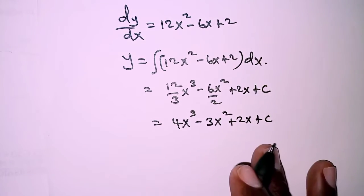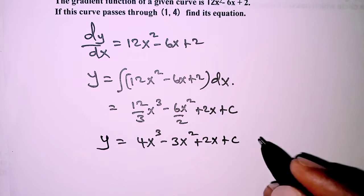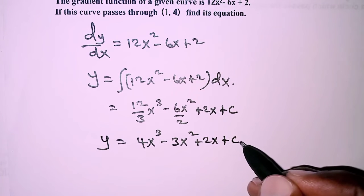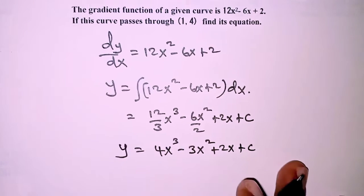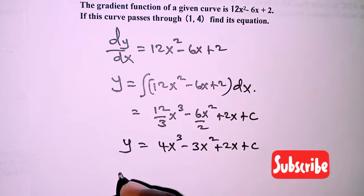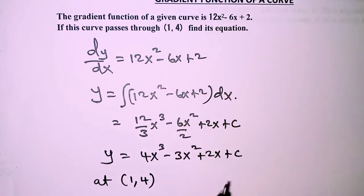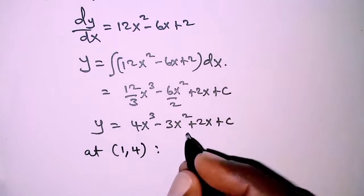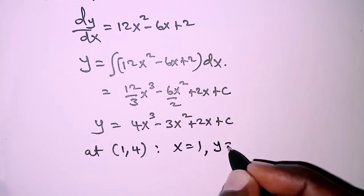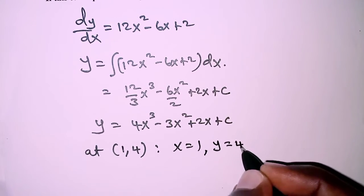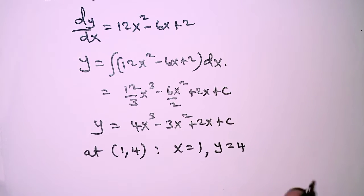This is not the equation until we find the value of C. We're going to find the value of C as follows. Remember we are told that the curve passes through point (1, 4), and we know that at this particular point the value of x is 1 and the value of y is 4.